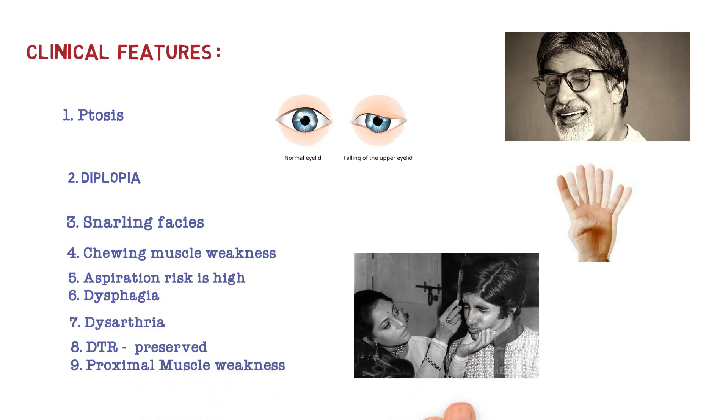There is proximal muscle weakness. You can see Jaya Bachchan combing the hair of Amitabh Bachchan. Is this image relevant here? Yes, this image is only for illustrative purpose. The point is Amitabh Bachchan's proximal muscles aren't working, means he cannot comb his own hair. Just for your memory, in this image Jaya Bachchan is combing Amitabh Bachchan's hair, so you can remember that in Myasthenia Gravis there is proximal muscle weakness.